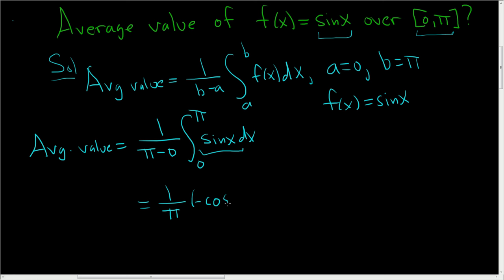If you ever forget that, just recall that the derivative of cosine is negative sine, so that the derivative of negative cosine is negative negative sine, which is sine. Okay, so we're integrating from 0 to pi.